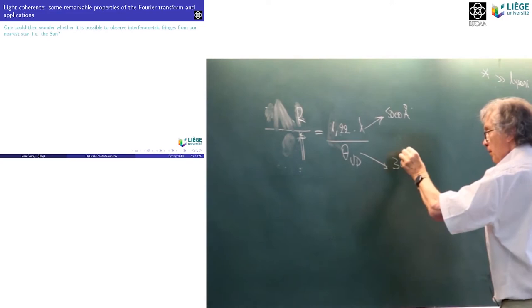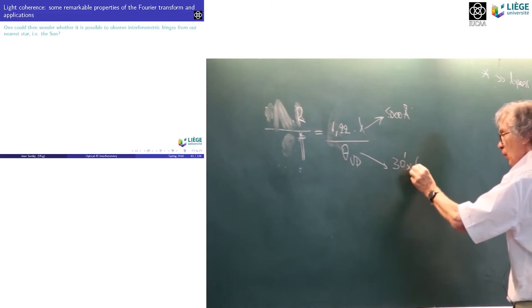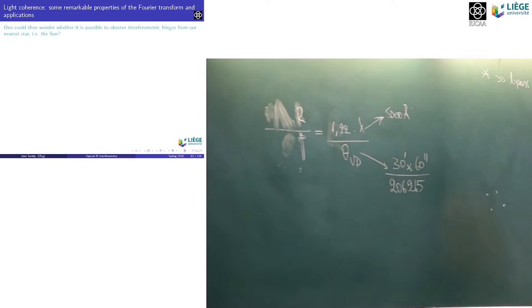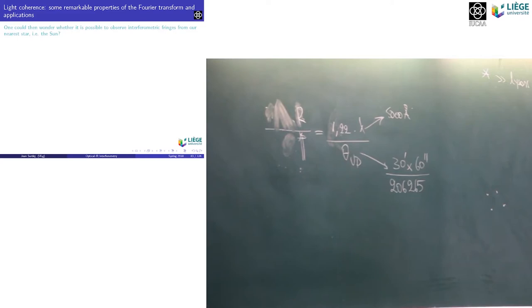Let's assume we observe at 5000 angstroms. Theta_UD — the angular diameter of the sun — is 30 arc minutes. To convert to arcseconds, multiply by 60. Then to convert to radians, divide by 206,265 — the number of arcseconds in one radian. You make that calculation, and you get the value of R in angstroms, which you then convert to microns, millimeters, or meters.